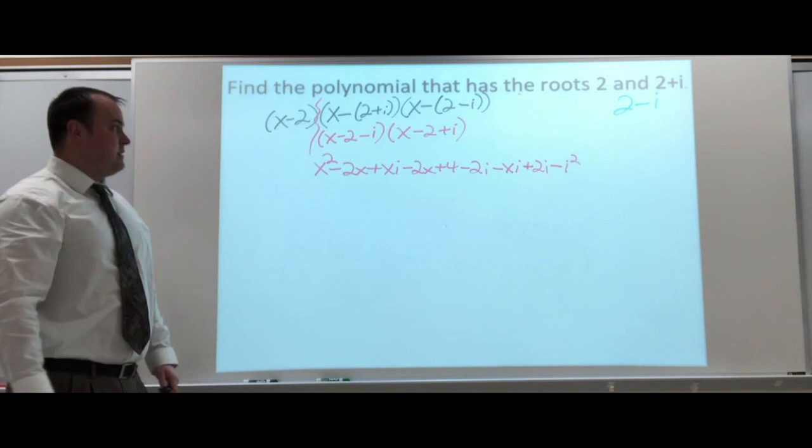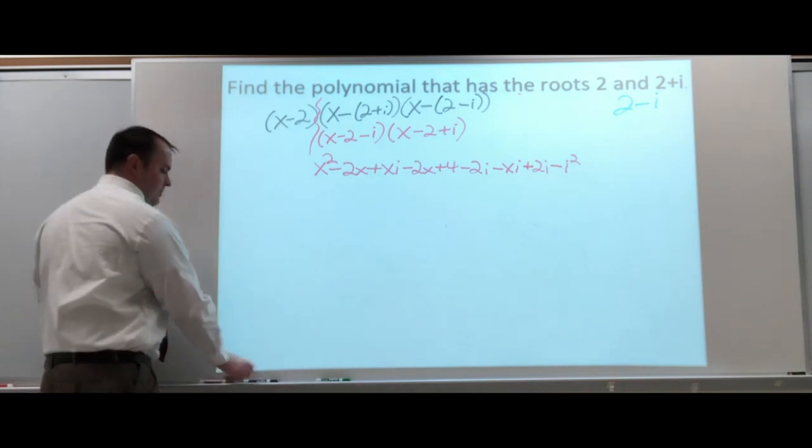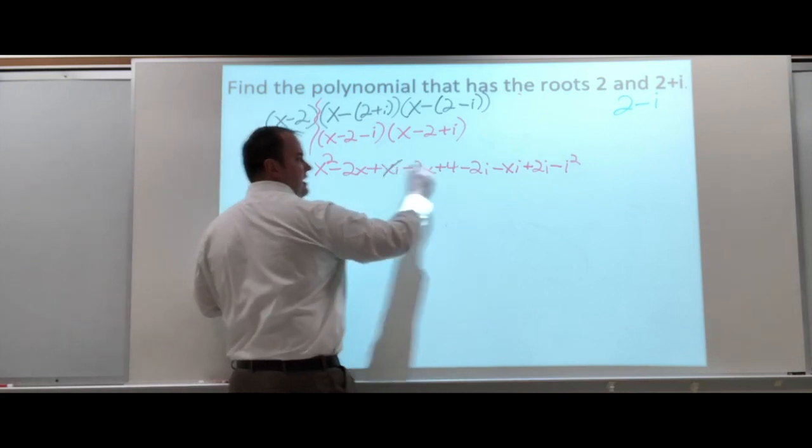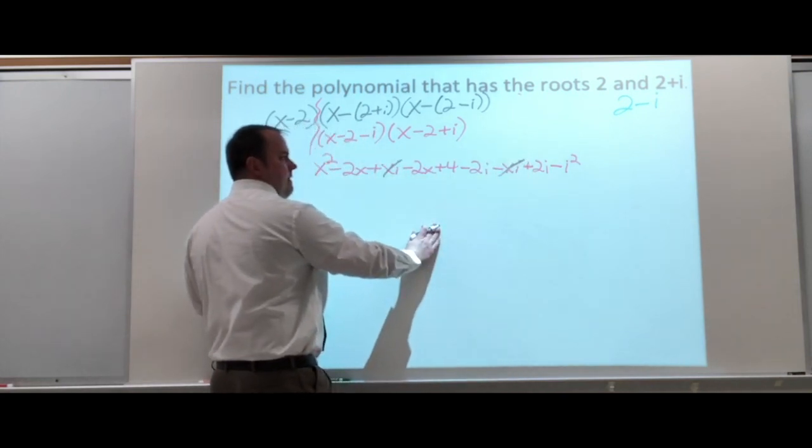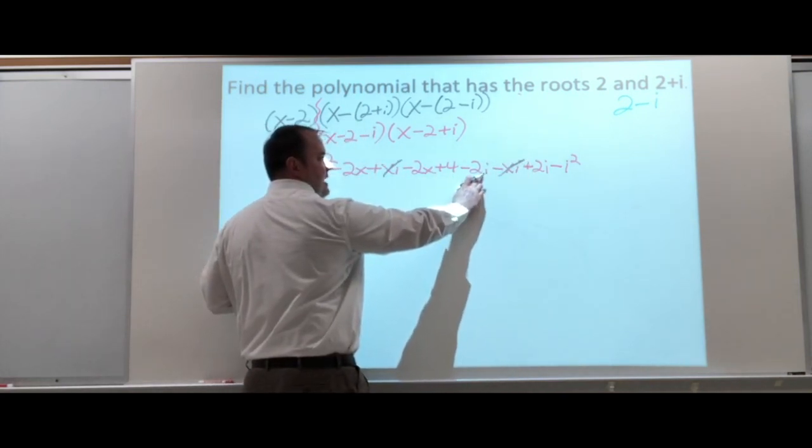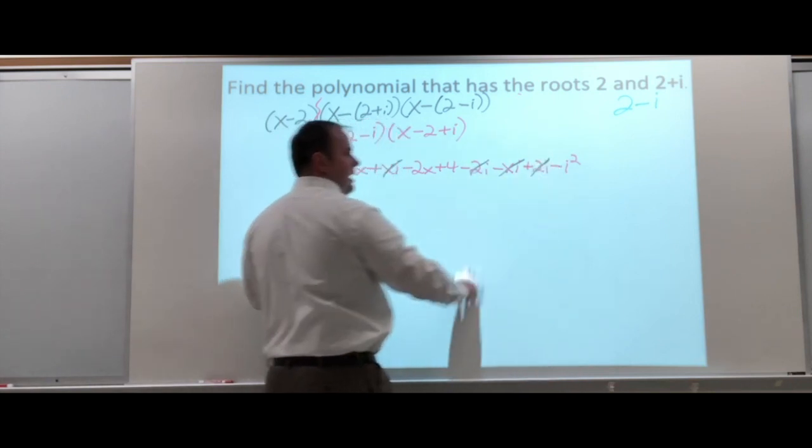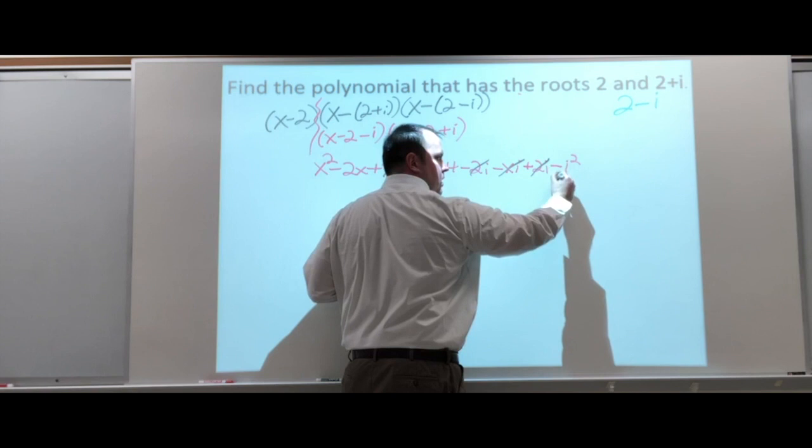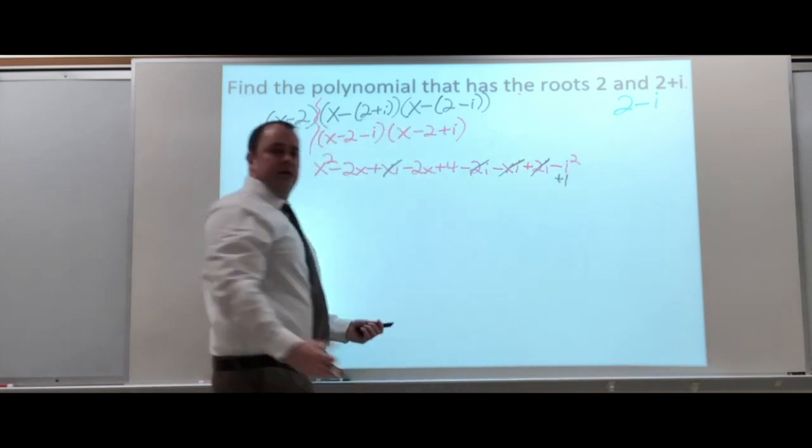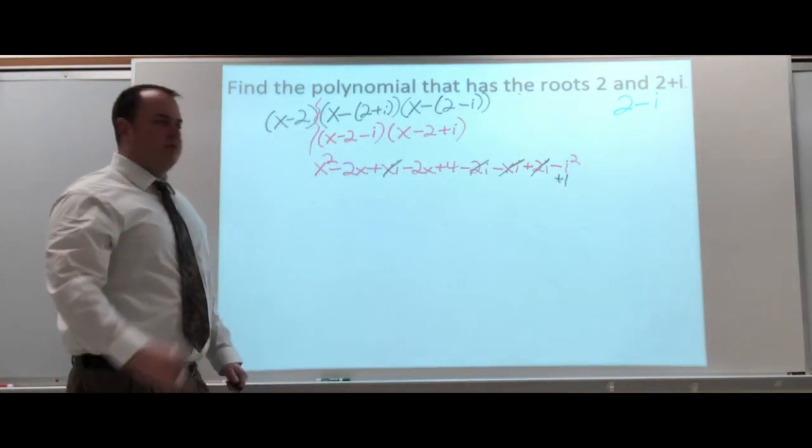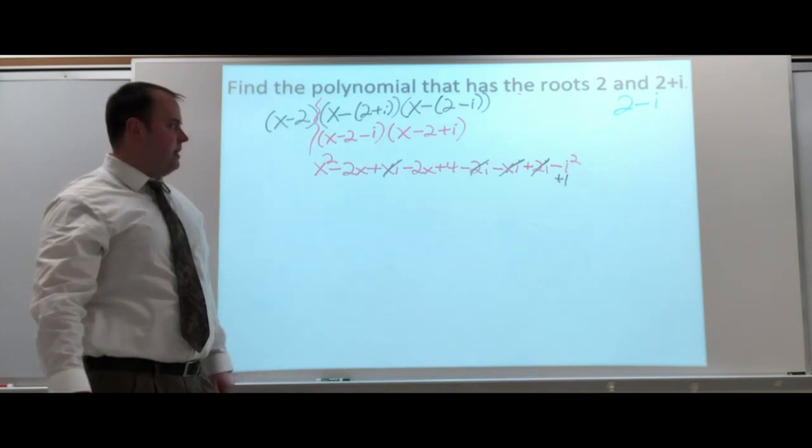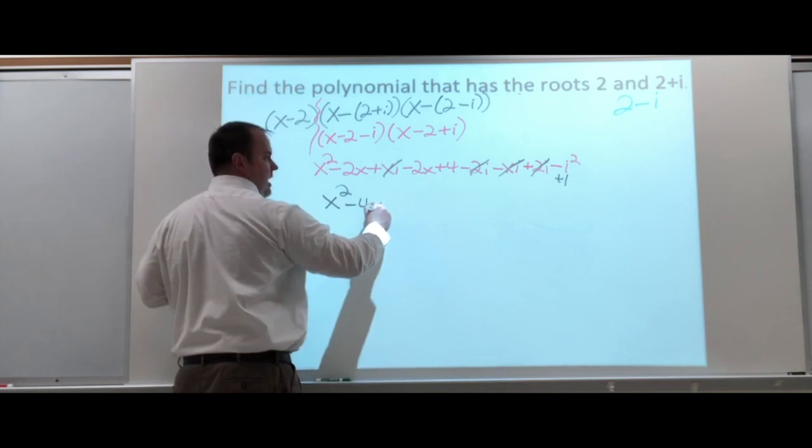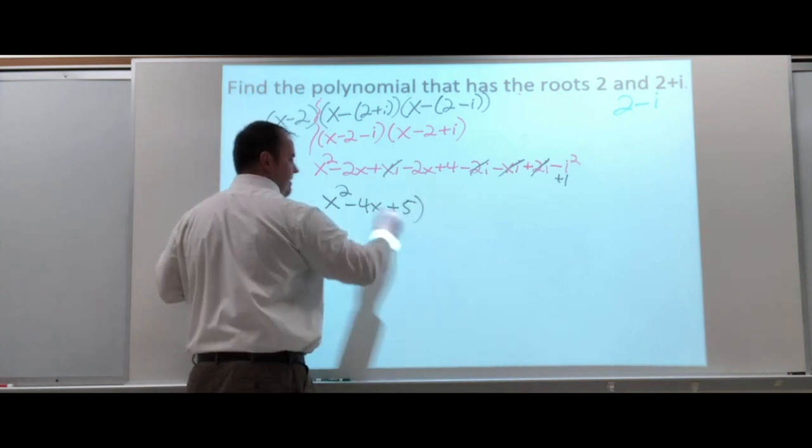Let's simplify some of those things. Can we cancel out? Well, positive xi, negative xi. We have negative 2i, positive 2i. The negative i squared is going to go to plus 1 because i squared is negative 1. So, negative negative 1 is a plus 1. Now, if we put all this stuff together, x squared minus 4x plus 5.